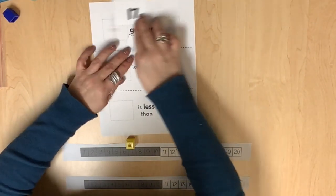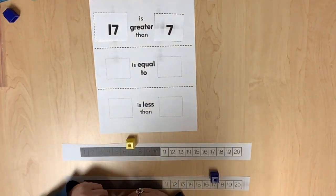If needed, number paths can still be used to represent each quantity and make comparisons.